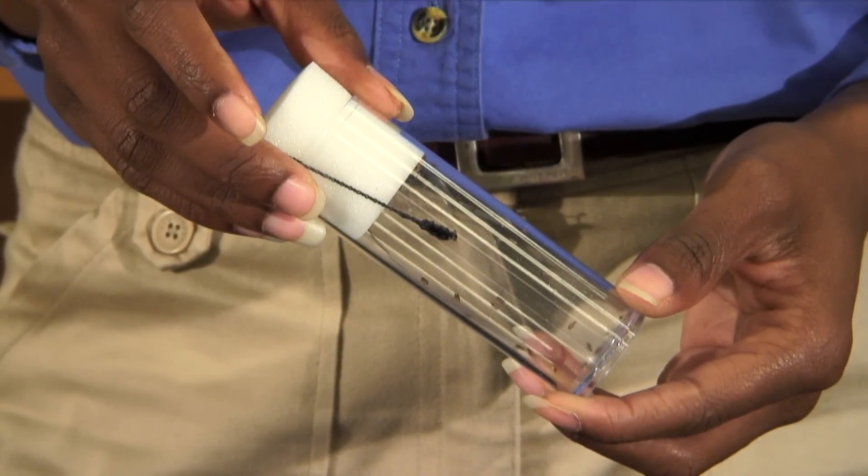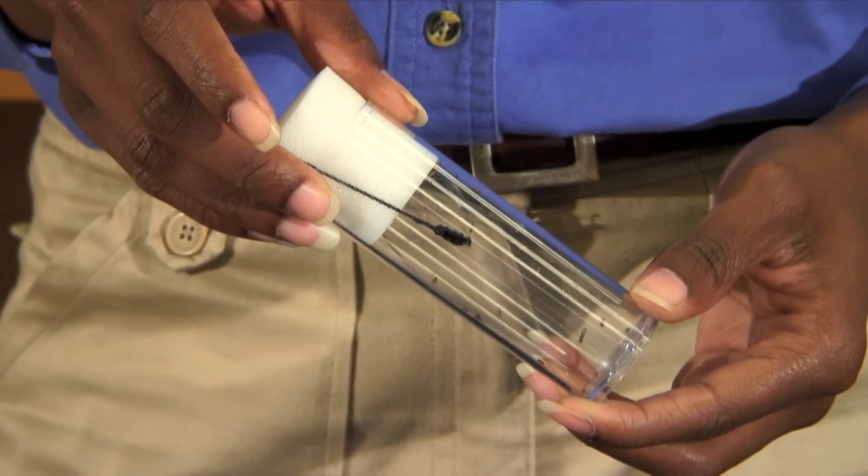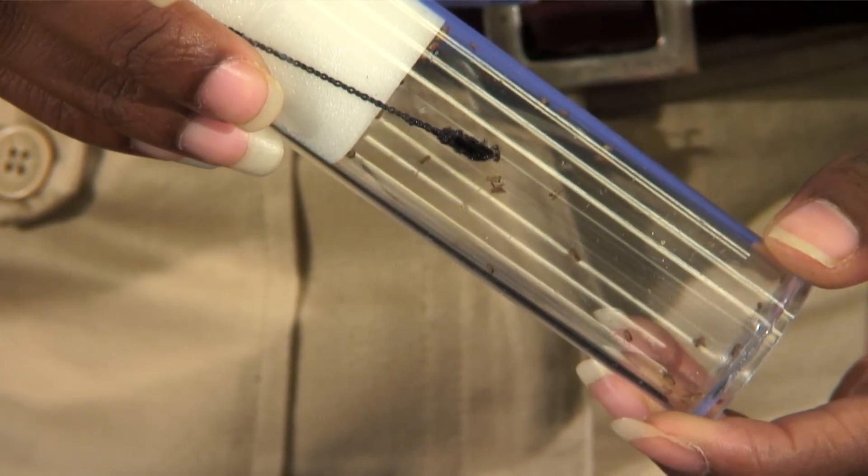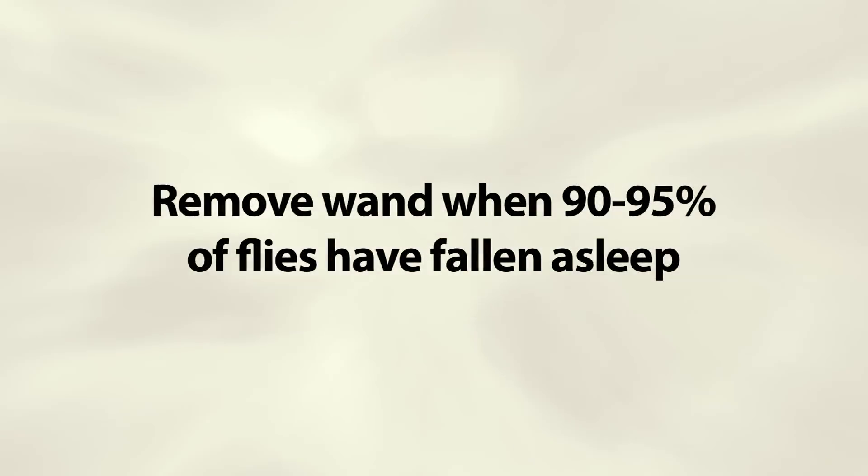Position it beside the plug so that the anesthetic tip is below the plug. Keep the culture vial upright with the wand in place. Watch the flies closely and remove the wand when 90 to 95 percent of the flies have fallen asleep.